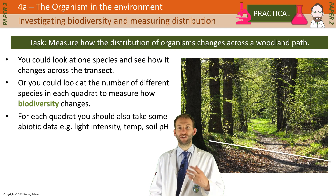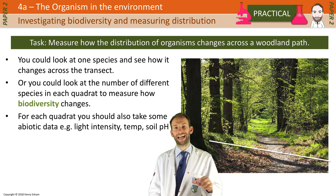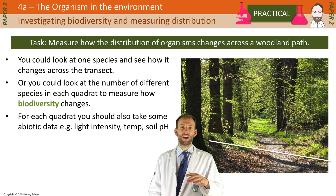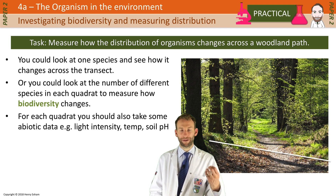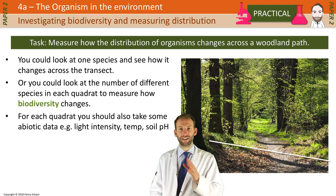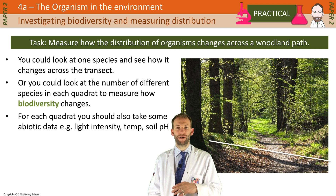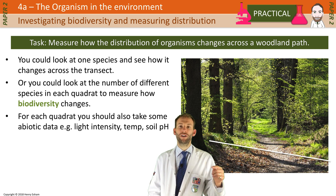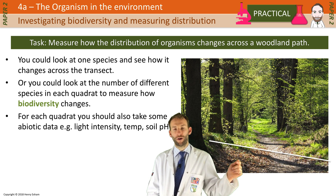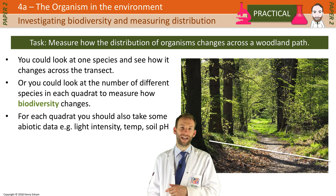Then what you can do is look at biodiversity, because you can look at how the number of different species changes. Maybe on the outsides of the path you're getting high biodiversity — maybe 10 different species per quadrat — whereas in the middle of the path you're only getting one type of species. So the path has affected the biodiversity. Or you could look at one species and its population across the whole pathway.